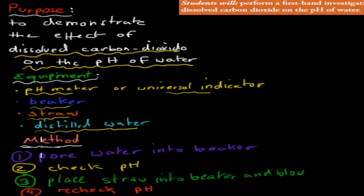And the method, so this is how you would have done the actual experiment, is first, you would have poured water into your beaker. After that, you would have checked that pH to make sure it's a pH of 7. Then you would have placed a straw into a beaker and blew air or bubbles into that beaker. And remember, whenever you blow something out, you blow out carbon dioxide. So that's the way we can actually check what carbon dioxide does to water by blowing carbon dioxide into a beaker.